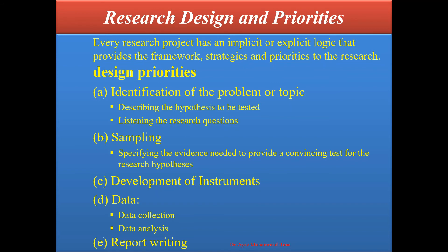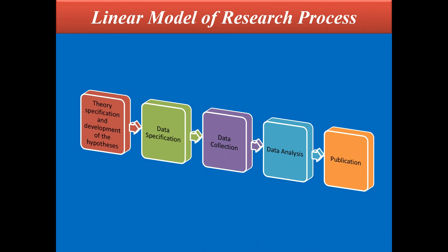These are the various steps generally in the design of a study or research. In the linear model of research process, the steps are: first, theory specification and development of the hypothesis; second, data specification; third, data collection; fourth, data analysis; and fifth, publication.